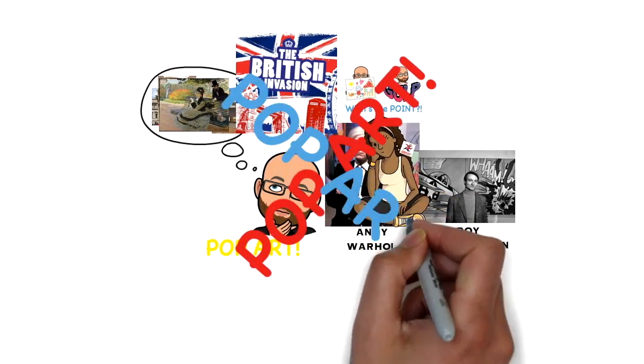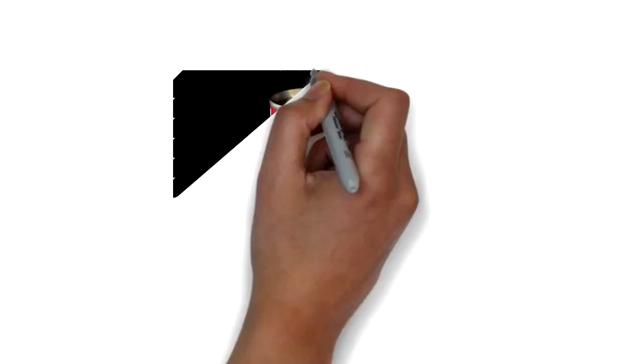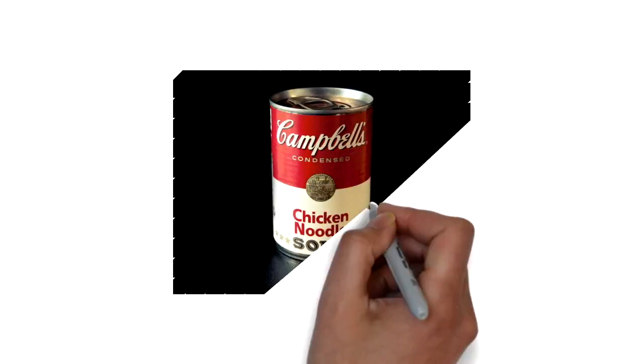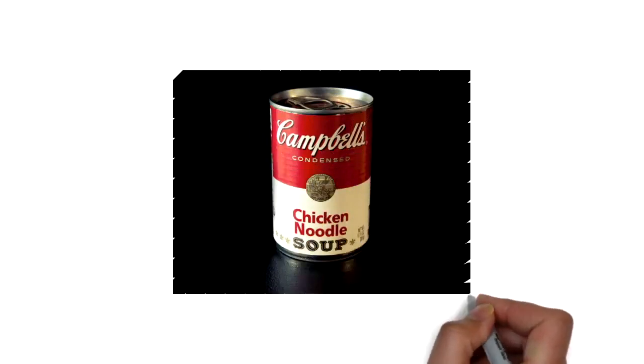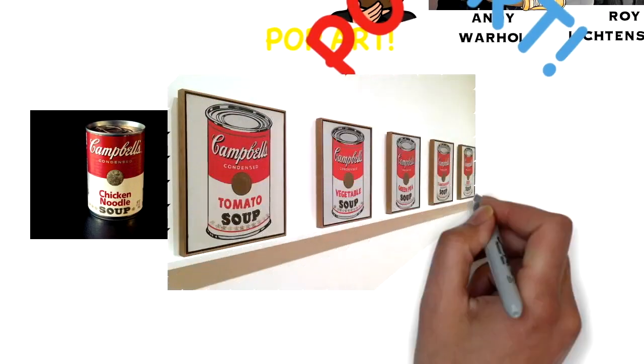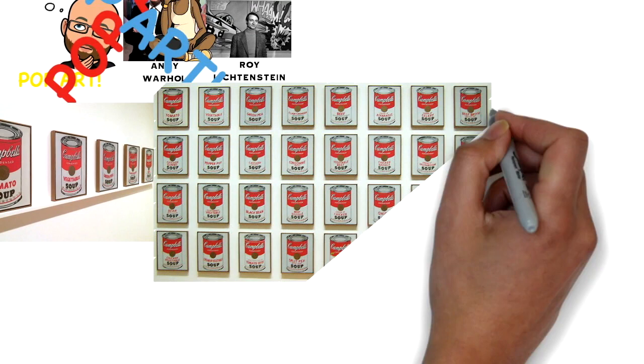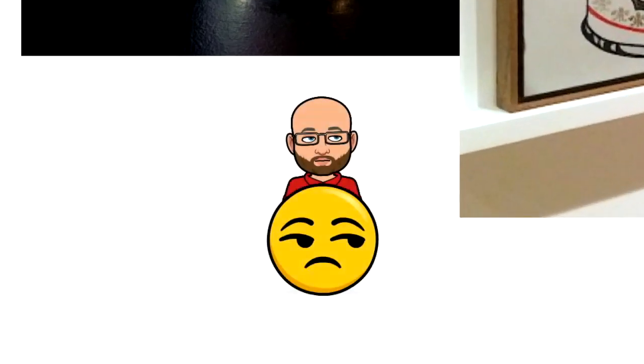Pop art used popular culture as its subject. Critics of pop art thought it was banal, which means lacking in originality and boring. And while they might have had a point that Warhol didn't design the Campbell's soup can, and it therefore wasn't original, he did use the image in an original way. And I gotta say, when I look at these paintings, I don't find them super boring. Get it? Super? Okay.